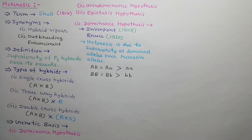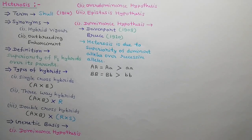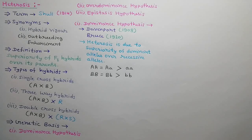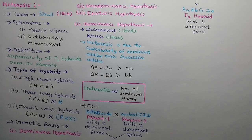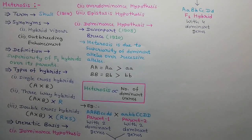It means AA and Aa are equally dominant over aa. Similarly, BB and Bb are equally dominant over bb. Heterosis is directly proportional to the number of dominant genes contributed by each parent. For example, parent 1 has two dominant genes and parent 2 also has two dominant genes. If we cross them, the F1 hybrid is produced which has four dominant genes.